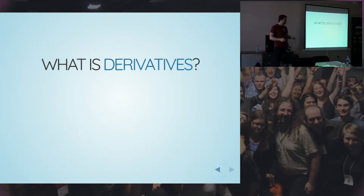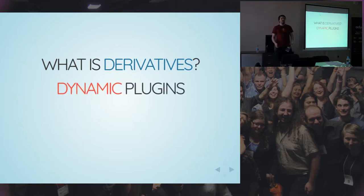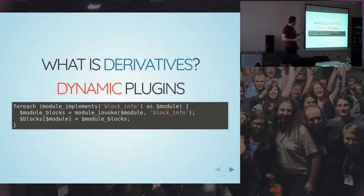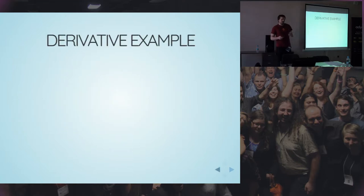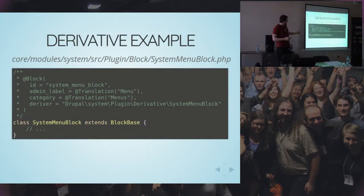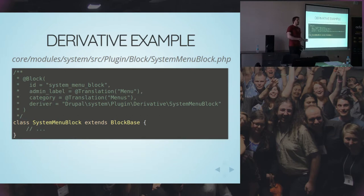Дальше чуть веселее — деривативы. Сложное слово, мне оно мало нравится, пришло откуда-то из математики. Но это динамические плагины. Это когда вы можете написать один плагин, одну реализацию, использовать его для очень большого количества вещей. Например, вот пример с тем же блоком. В восьмёрке суть точно та же: мы перебираем какие-то вариации нашего блока, собираем их и возвращаем несколько плагинов. Например, у нас есть system_menu_block — на каждую менюшку, которую вы создаёте в админке, у нас появляется новый блок для неё, но код для блока только один.